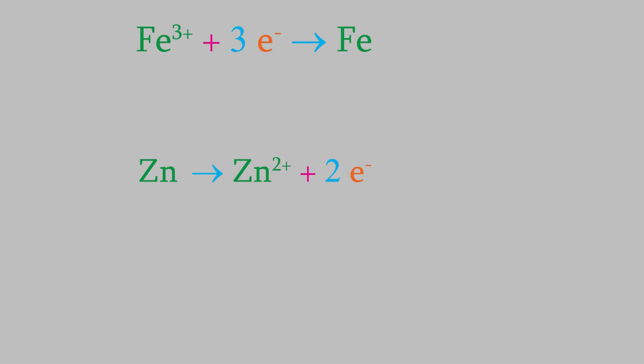In order to write the overall reaction, we need the electrons to cancel out. So we'll multiply the zinc reaction by 3 and the iron reaction by 2.